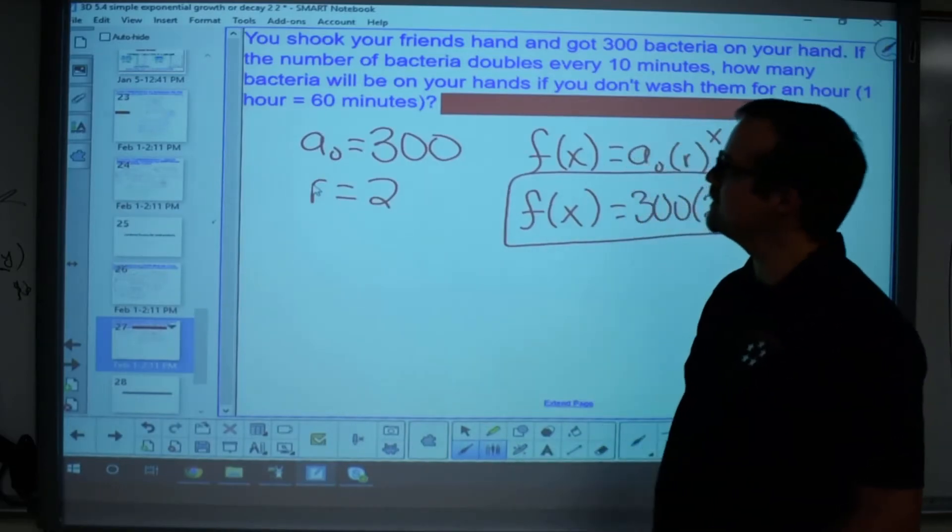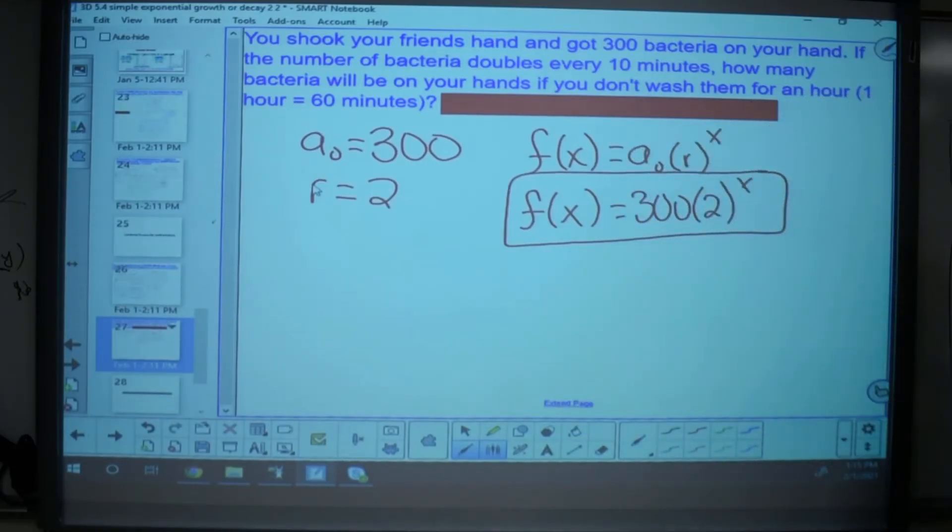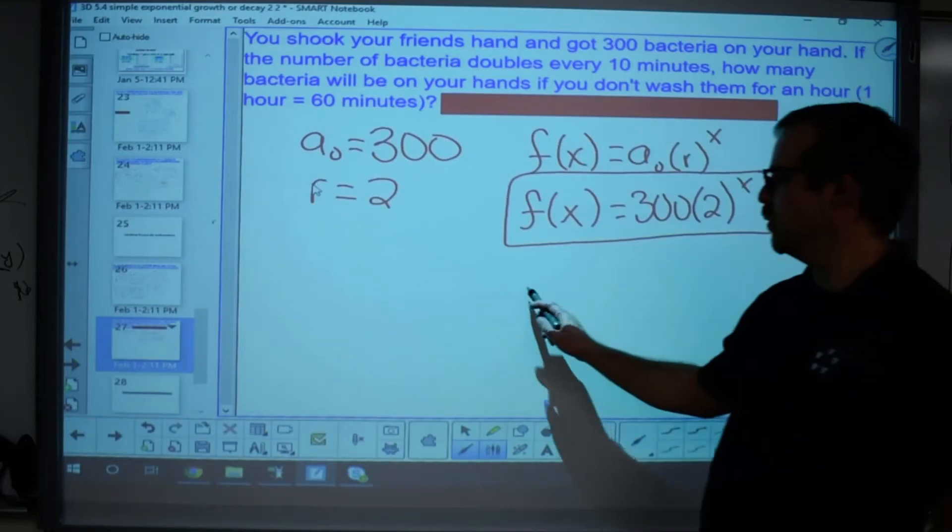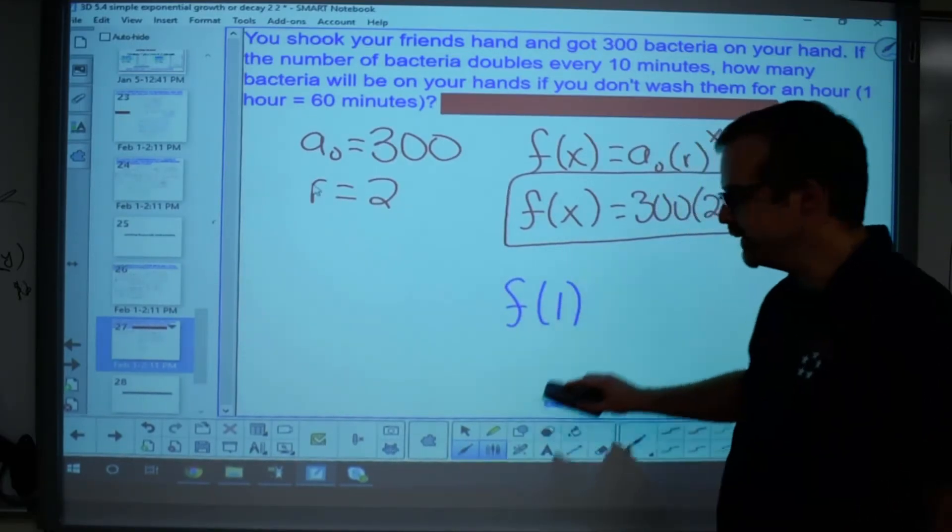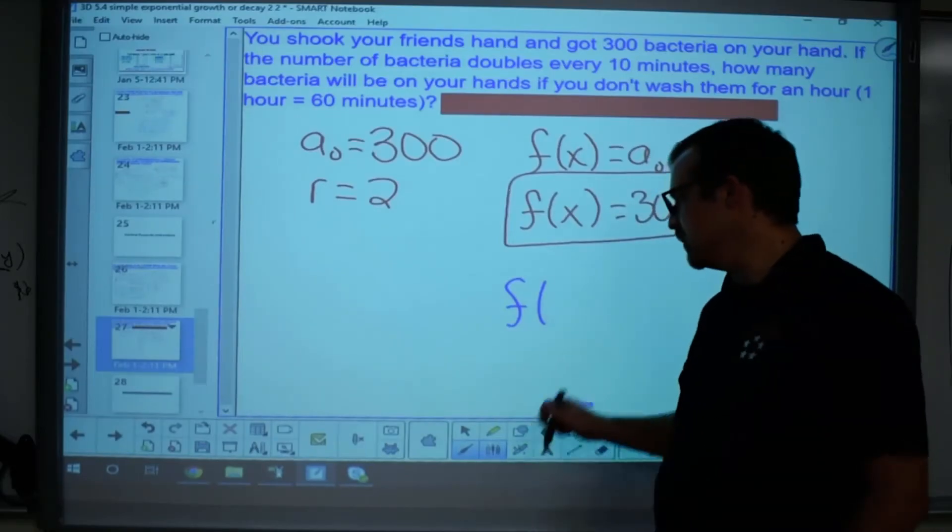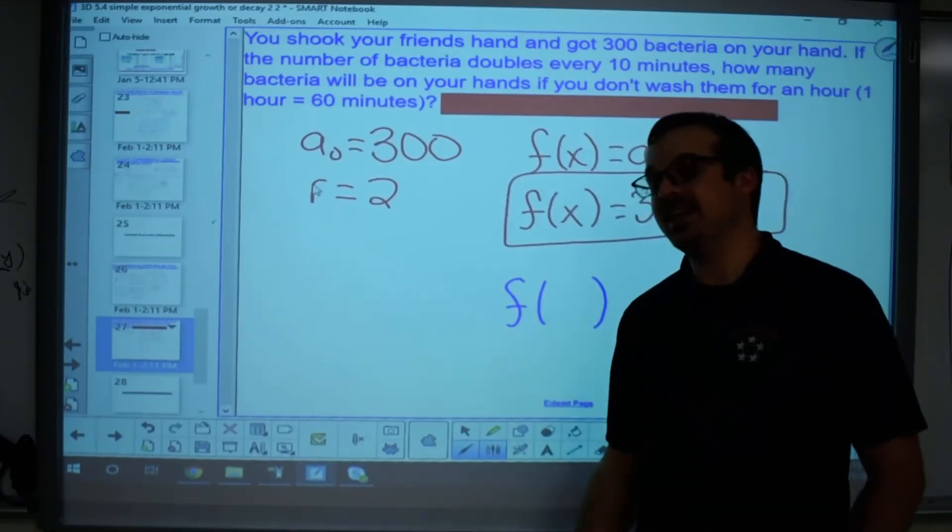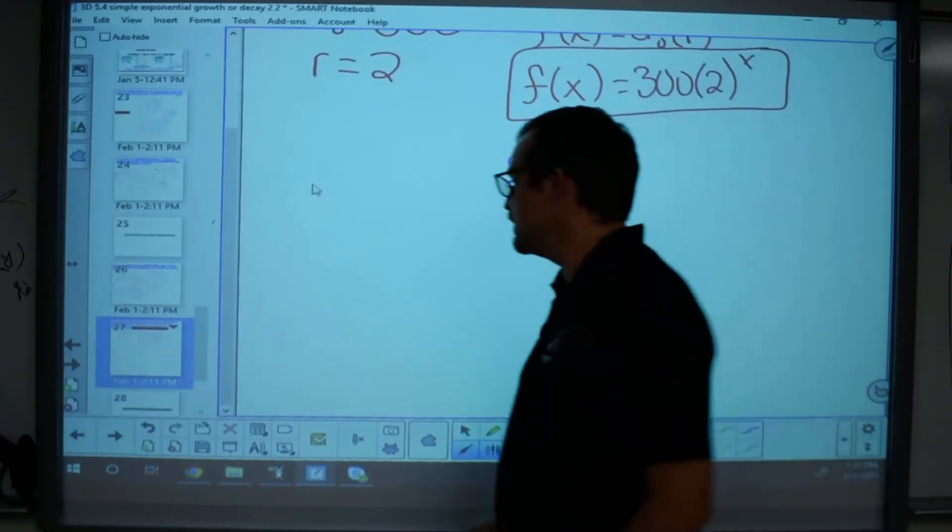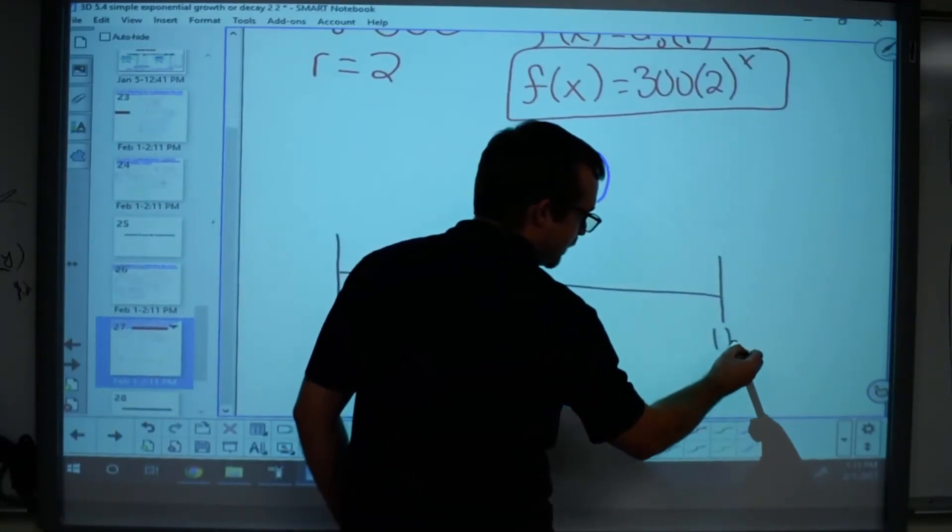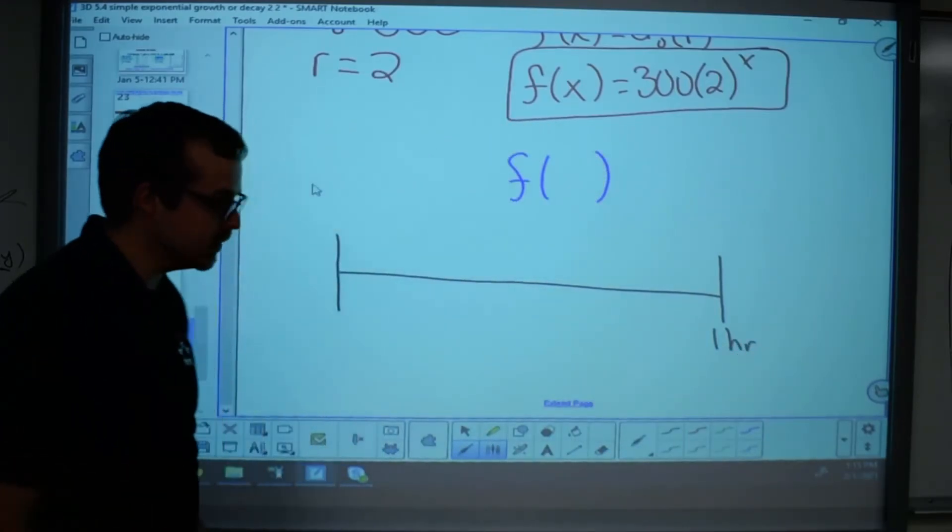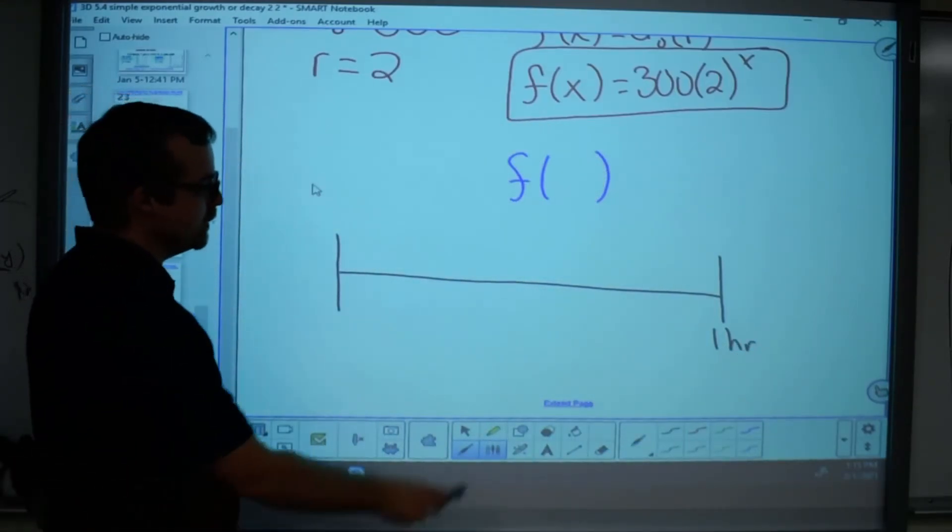Now the question is, how much bacteria will be on your hands if you don't wash them for an hour? Now a lot of people want to do, well, one hour must mean that x is one. Nope. Because how often does the bacteria double? The bacteria doubles every 10 minutes, right? So here's my timeline. Here's one hour, right? I might have to shorten this a little bit. I think it'll make sense, right? Halfway through is at 30 minutes.